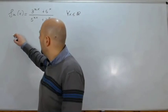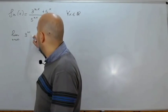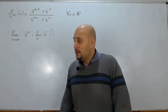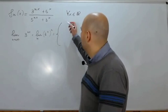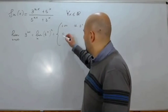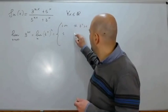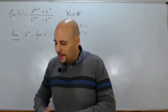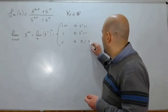Per prima cosa andiamo a notare come il limite per n che tende all'infinito di 3^(nx) — che è uguale al limite per n di (3^x)^n — vale, facendo valere i requisiti del nostro limite notevole per n→∞ di a^n: vale +∞ se 3^x è maggiore di 1, vale 1 se 3^x è uguale a 1, vale 0 se 3^x è compreso fra 0 e 1.